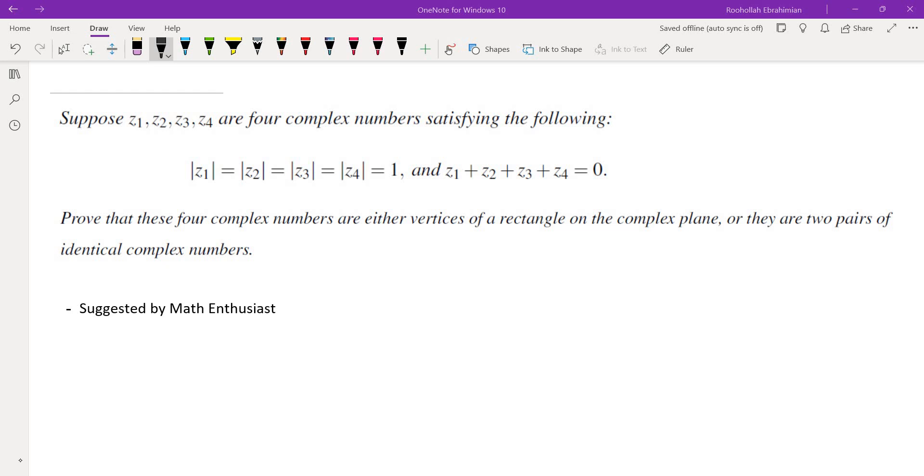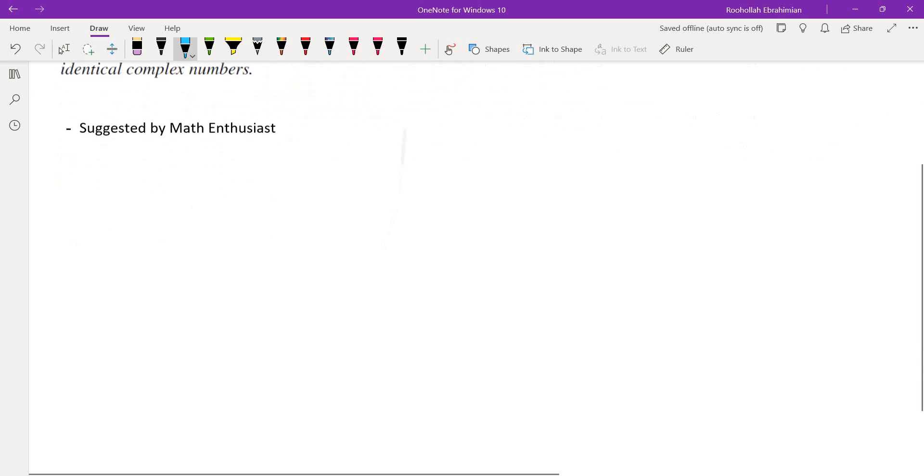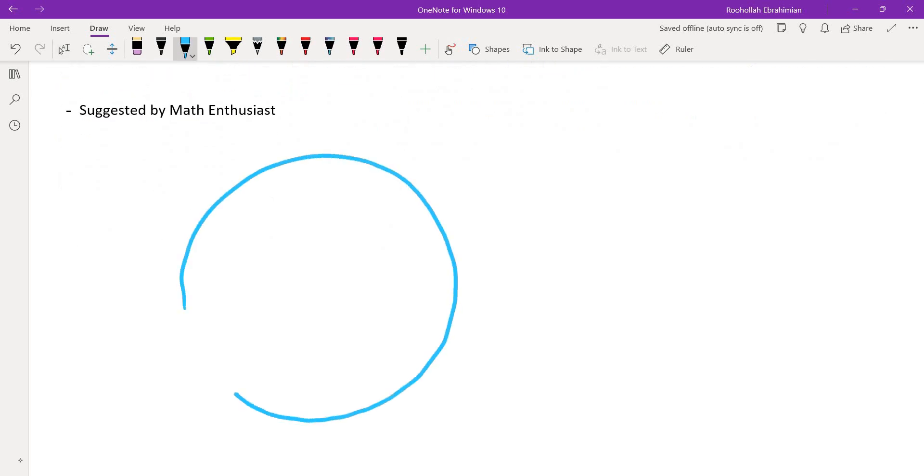Here is what we're going to do. We are going to think about this in the complex plane because they told us they are vertices of a rectangle and also the condition that they gave us is absolute values equal to 1. So how do we deal with that? Let's draw a diagram for this and then we'll see what that tells us.